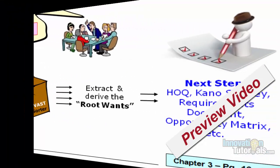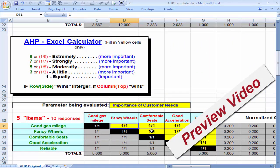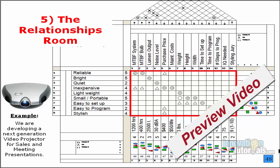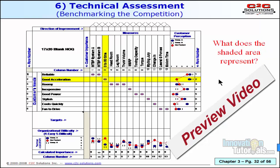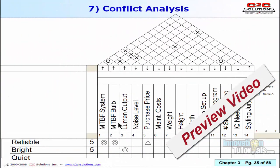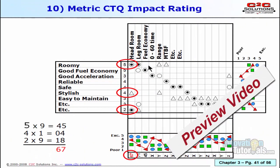The first question we ask is which is more important, customer want A or B. The second question is how much more important, using the table shown. For example, mean time between failure of the system has a strong influence on reliability but no influence on brightness or quietness, and maybe a little influence on inexpensive. The technical assessment on the bottom proved, interestingly, that the Ford was actually much faster than the Toyota and Honda in their 0-to-60 time. The importance ratings on the bottom are simply calculated by multiplying the symbol weight times the importance rating and adding up each column — so for example, the first column, headroom, has three symbols in it.